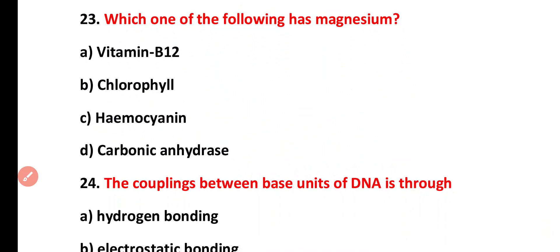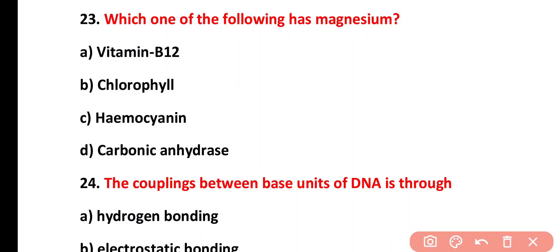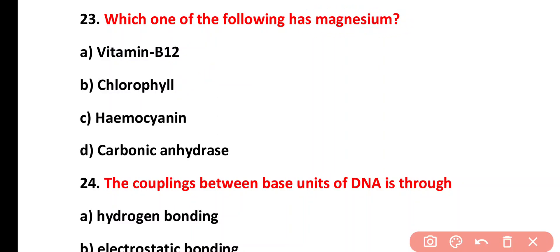Question twenty-three: which one of the following has magnesium? Options: vitamin B12, chlorophyll, hemocyanin, carbonic anhydrase. The correct answer is option B. The center of the chlorophyll molecule contains magnesium.